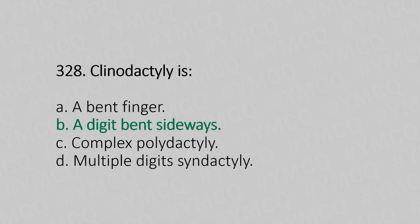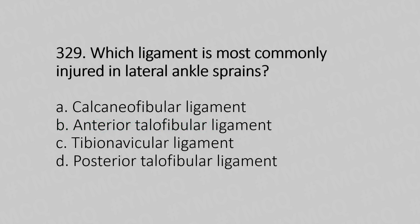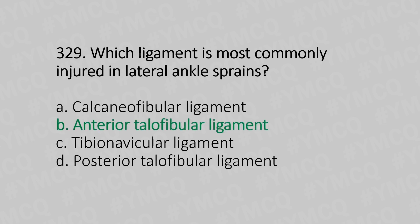Question number 329: Which ligament is most commonly injured in a lateral ankle sprain? Option A: calcaneofibular ligament. Option B: anterior talofibular ligament. Option C: tibionavicular ligament. Option D: posterior talofibular ligament. The answer is option B, anterior talofibular ligament.